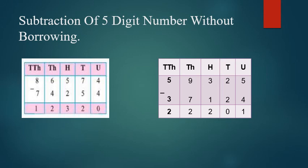Now children, here you have done your 4 and 5-digit number subtraction. While arranging these numbers, you have to keep in mind that when you arrange, arrange it correctly in their correct place value. If your arrangement of the numbers is wrong, your answer is also wrong. Thank you.